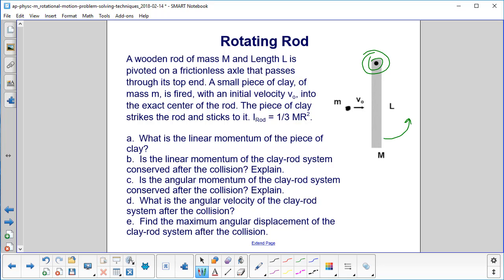What's going to happen is this entire rod will pivot on the axle and will rotate like that. So what is the linear momentum of the piece of clay? Then a couple questions about the linear and angular momentum of the clay-rod system after the collision, are they conserved? Then find the angular velocity of the clay-rod system and find the maximum angular displacement of the clay-rod system after the collision.